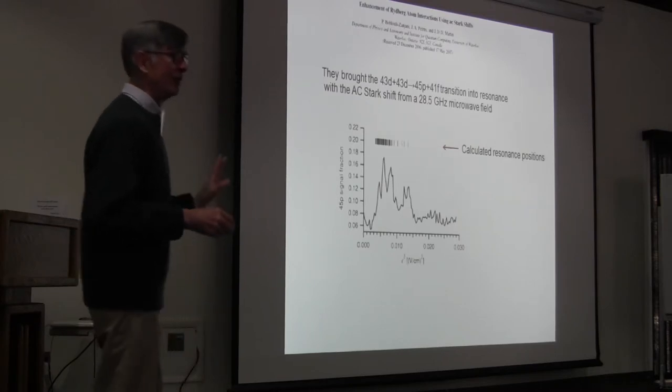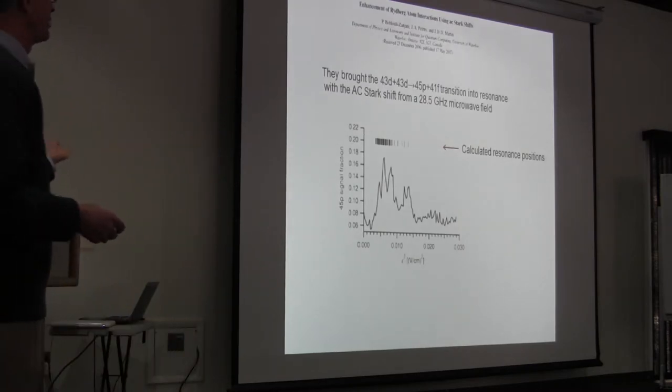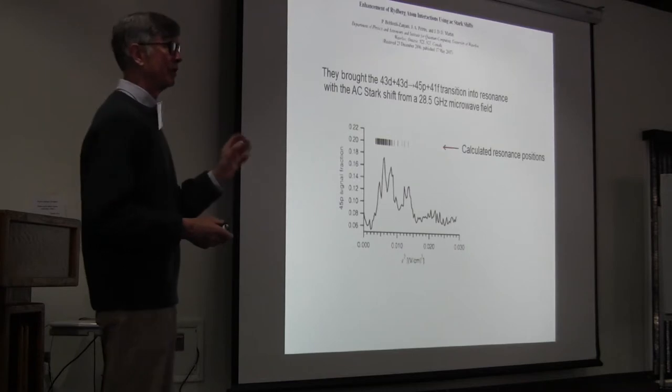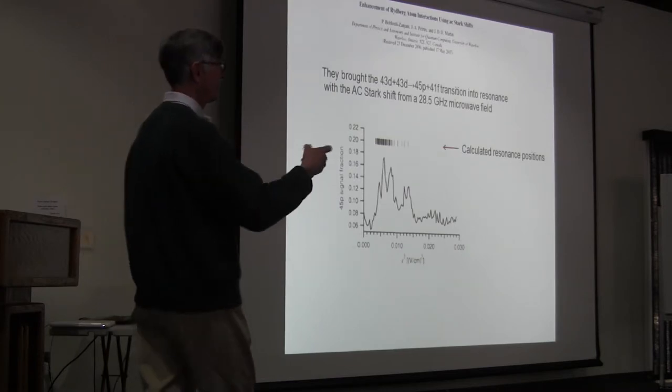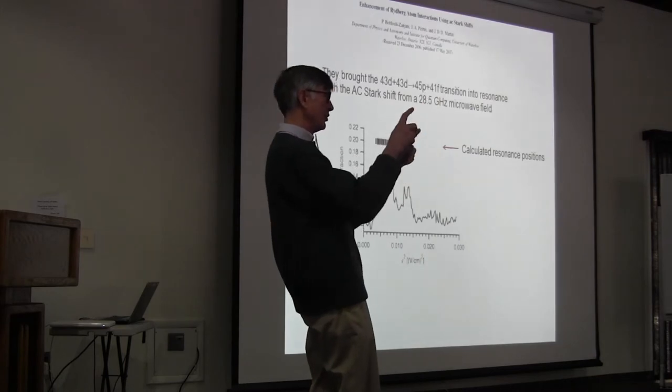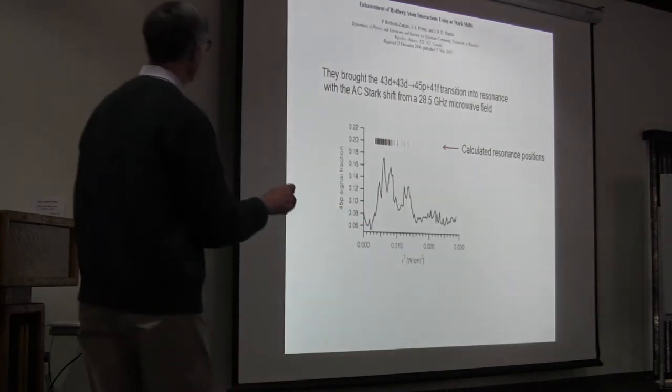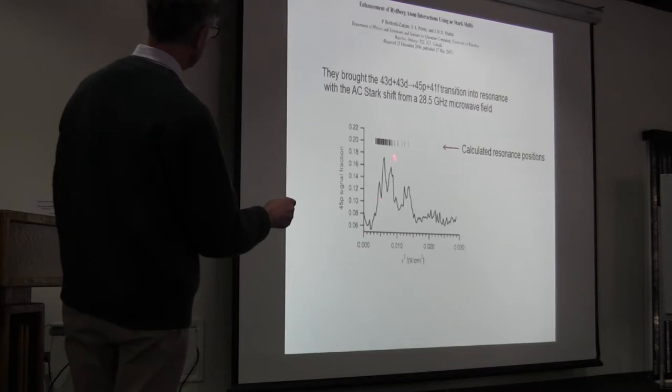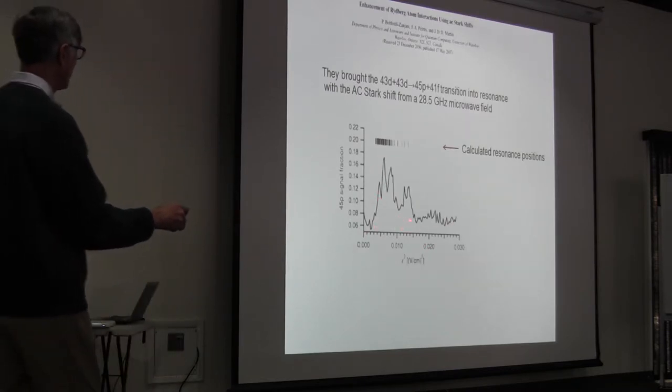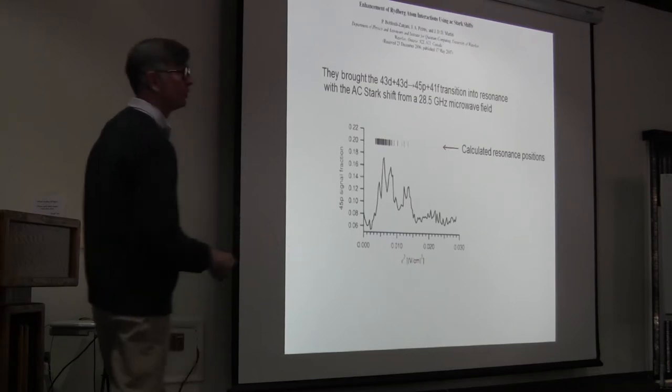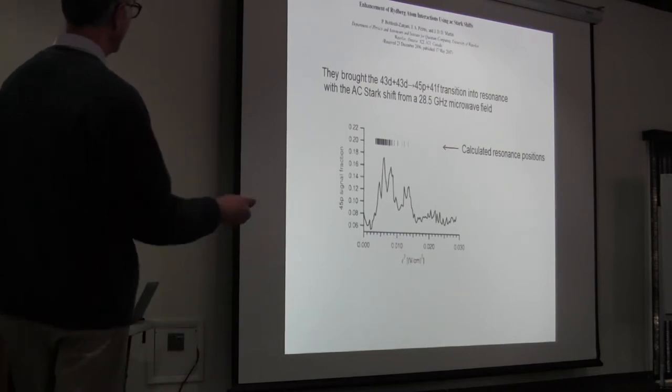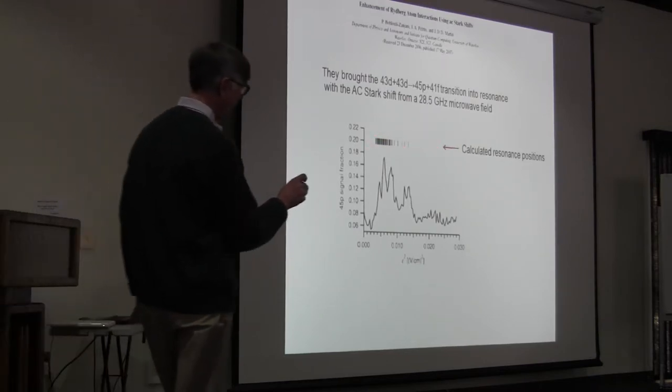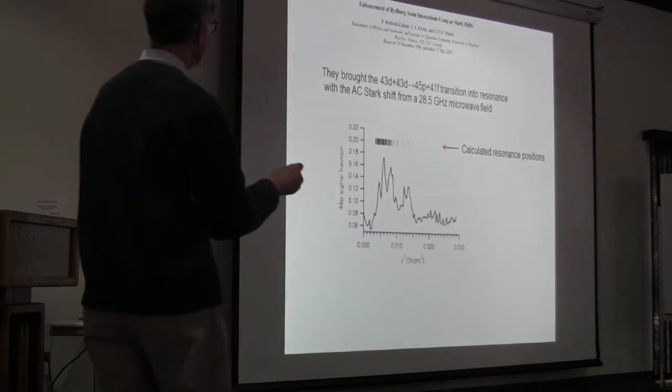What they realized is that you can shift things in any direction by just picking the appropriate frequency of microwave field, and using the AC Stark shift. Depending upon which side of resonance you're on, will be shifting, shift levels apart, or bringing together. Using a 28 gigahertz field, they could bring this into resonance. They could easily see these very low energy, very low field resonances. This is the amplitude, the squared amplitude of the microwave field. It's a very small microwave field. These are where they calculate the resonance positions.